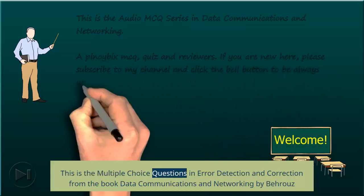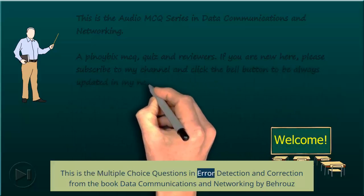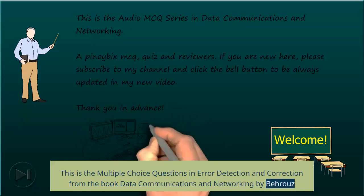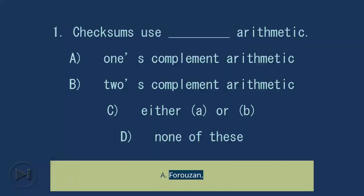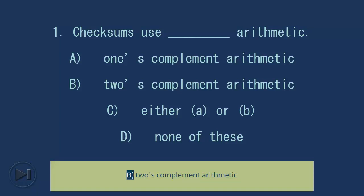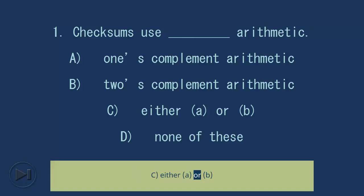These are multiple choice questions in error detection and correction from the book 'Data Communications and Networking' by Forouzan. Question 1: Forouzan's checksums use blank arithmetic. A) one's complement arithmetic, B) two's complement arithmetic, C) either A or B, D) none of these.